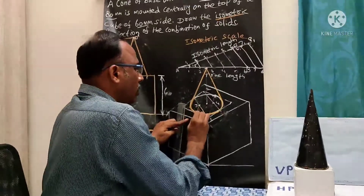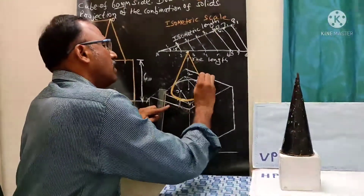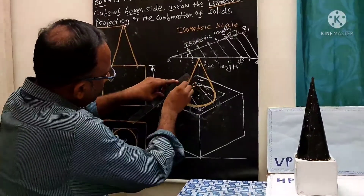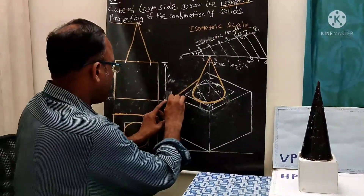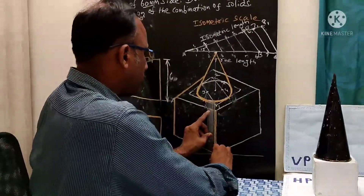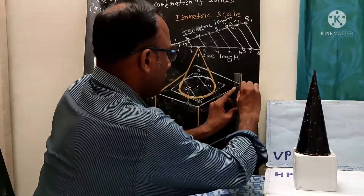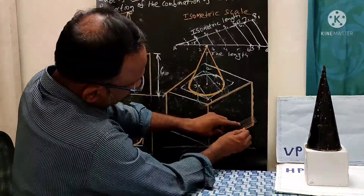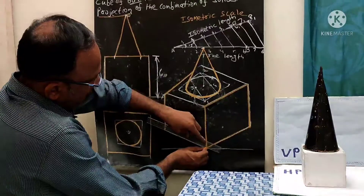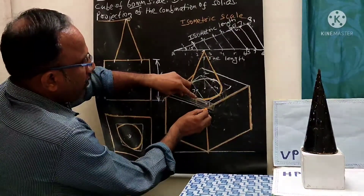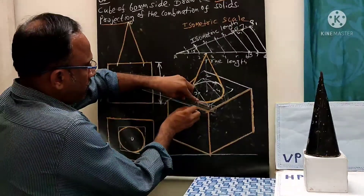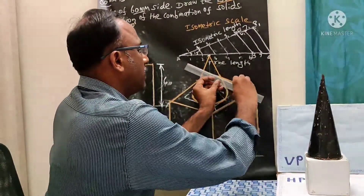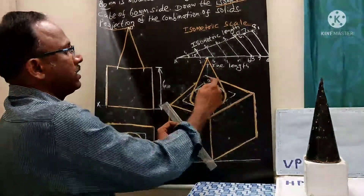Use the HB pencil for darkening the cone. The remaining portion of the cube needs to be drawn with thick lines. Up to this point only is visible on one side, and here also only this point is visible. So this is for your reference.